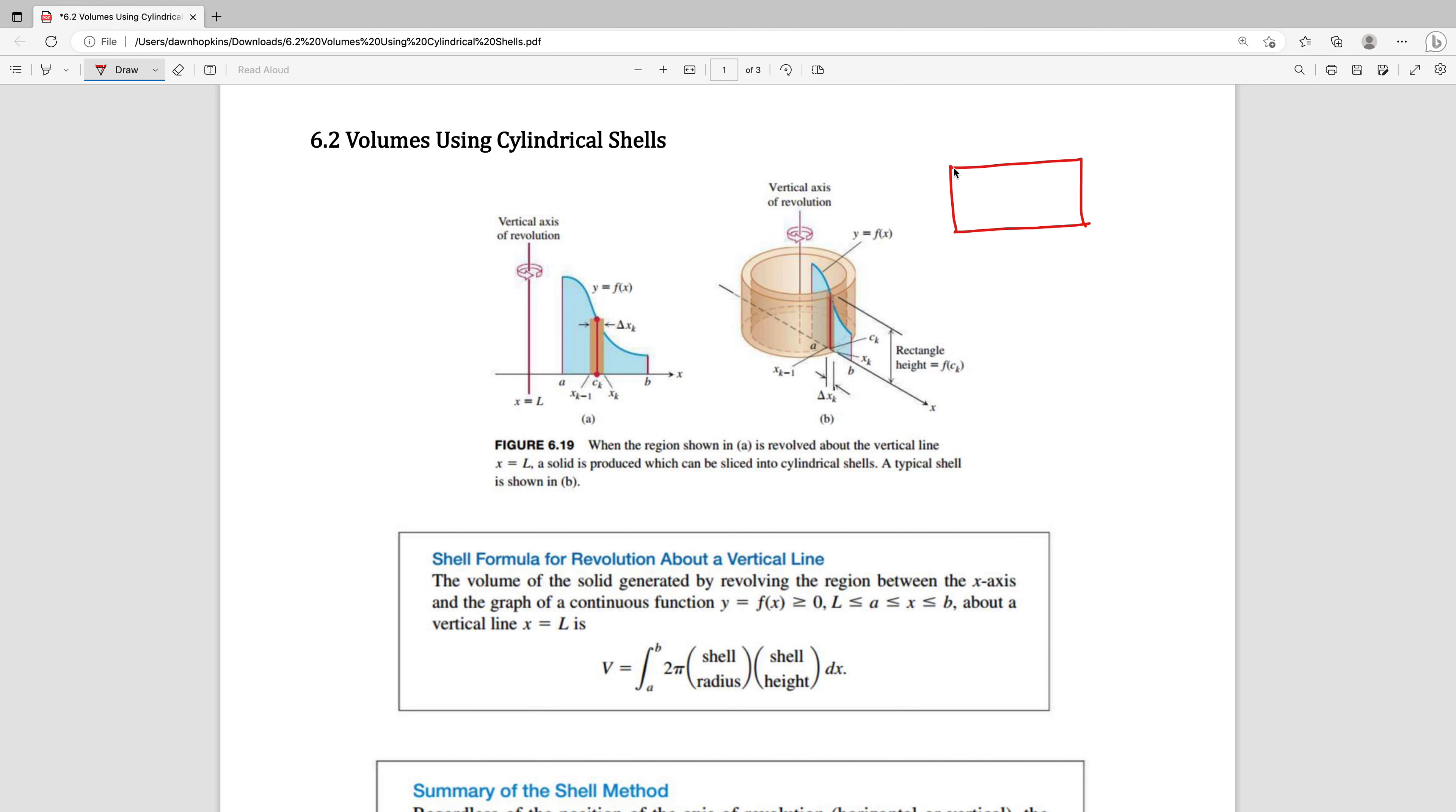The length of that rectangle would be the circumference of the circle which is 2 times pi times the radius. And the width of that rectangle would be the height of your cylinder.